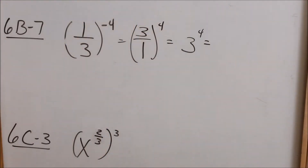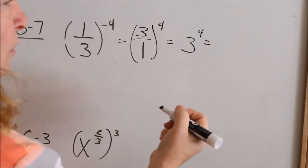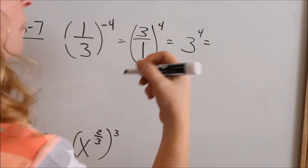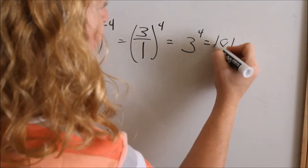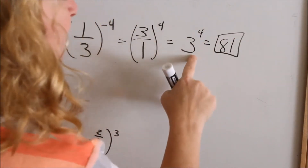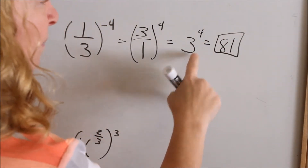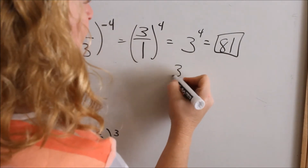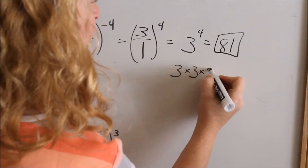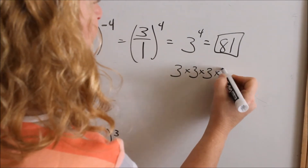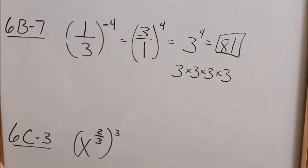And from these other problems, 3 to the 4th: 3 times 3 is 9, times 3 is 27, times 3 is 81. Remember, this is not 3 times 4 — this is 3 times 3 times 3 times 3. Not 3 times 4.